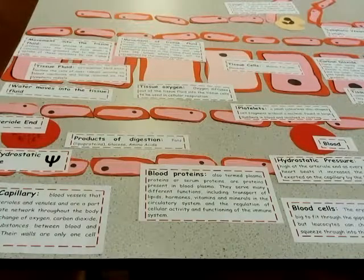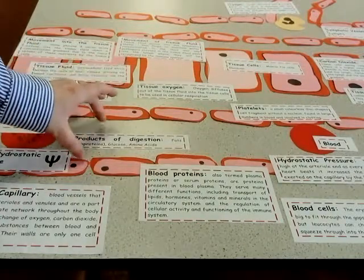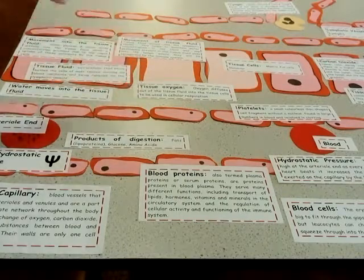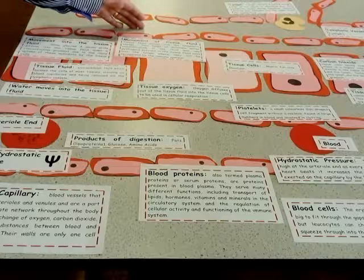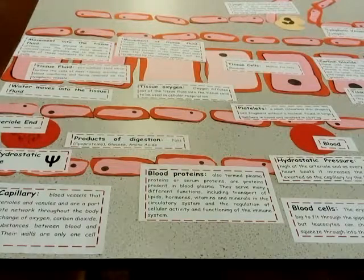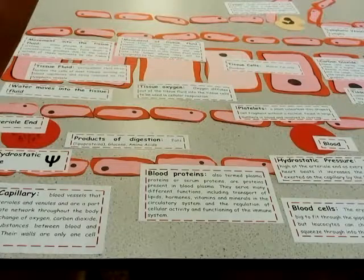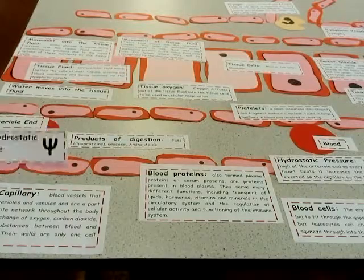When making tissue fluid, we need to consider the blood, the physical tissue fluid that we're going to make, and the lymph that we find in the lymphatic vessel. It all starts at the arterial end of the capillary. At the arterial end, the pressure, or the hydrostatic pressure, is relatively high.